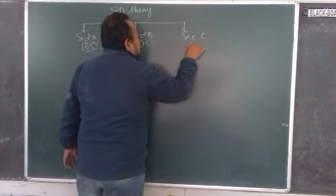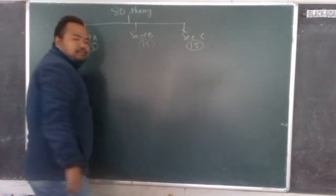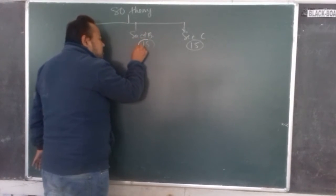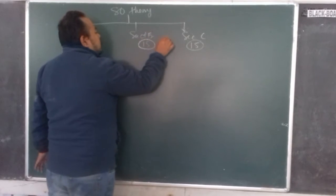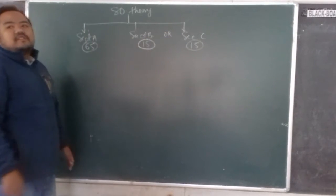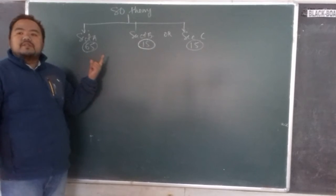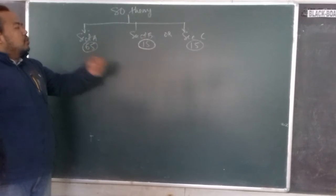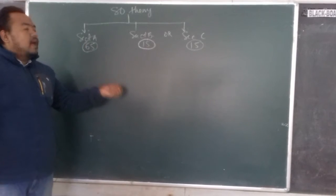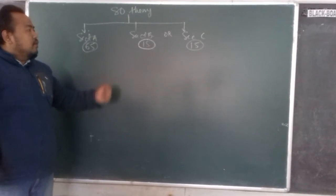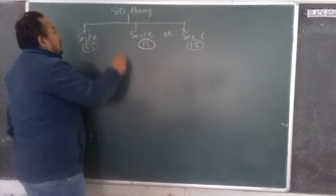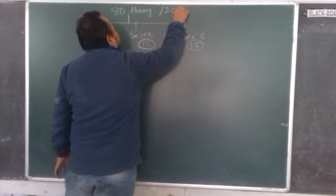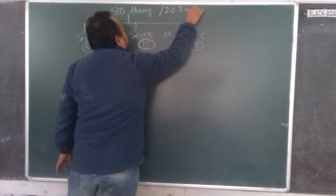What you have to understand is there is a choice between Section B or Section C. So Section A is compulsory, which is going to come for 65 marks, and there's a choice between Section B and Section C, which will come for 15 marks. So the mathematics paper is going to be 80 marks for theory.